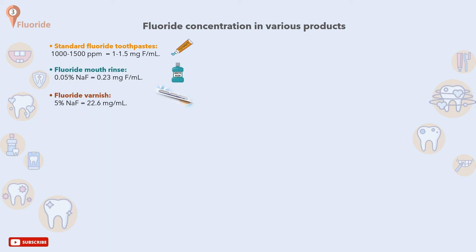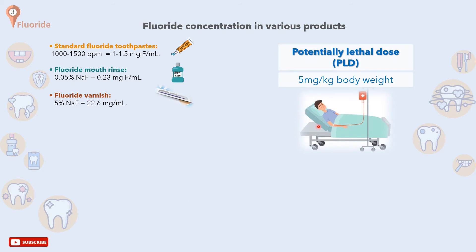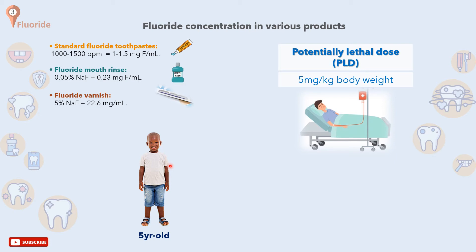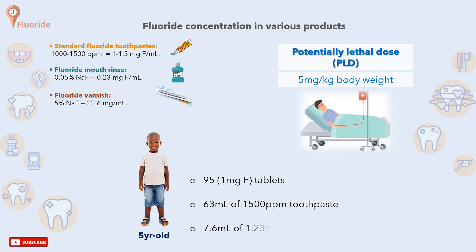To reach the 5 mg of fluoride per kilogram of body weight threshold — the potentially lethal dose requiring hospitalization — a 5-year-old weighing about 19 kg would have to ingest 95 tablets of 1 mg fluoride content, or about 63 ml of 1,500 parts per million fluoride toothpaste.